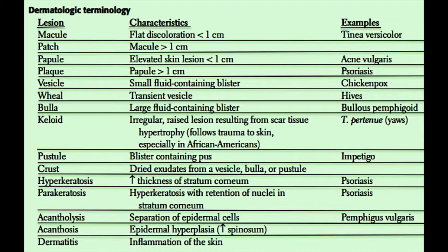Next we have vesicles, which are essentially like papules except that they're full of fluid — like a small blister. Vesicles are commonly seen in diseases such as chickenpox or herpes. Next we have wheals, which are just transient vesicles; a hive as seen in an allergic reaction is a common example. Then we have bullae, which are large fluid-containing blisters — think of it as a vesicle that's much larger than one centimeter; if it's very large, it's called a bulla.